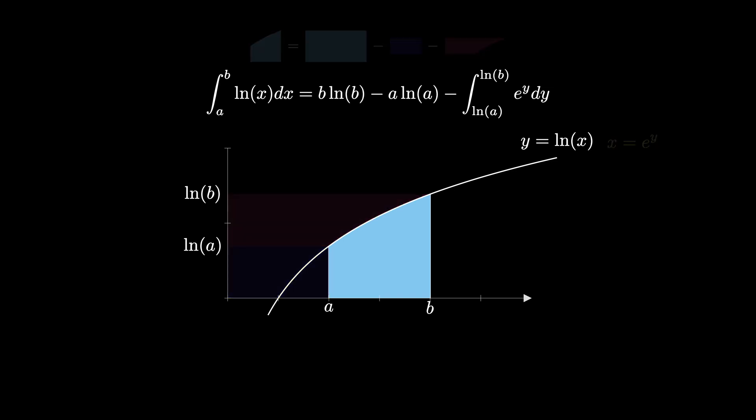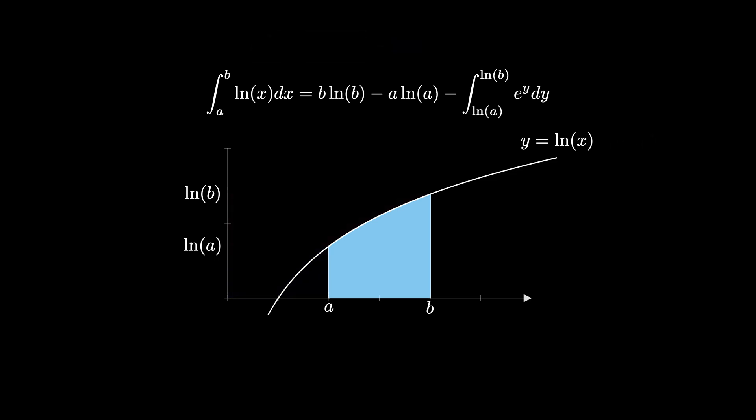So this strategy has replaced the integral of interest with a separate integral, but using the fact that the antiderivative of e to the y is e to the y and e to the natural log of x equals x for all positive values, we obtain the fact that this definite integral is b minus a.